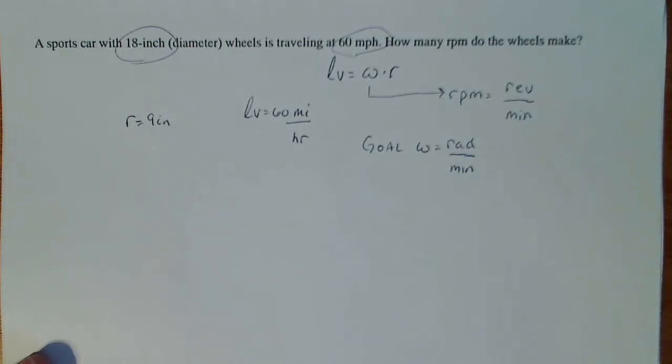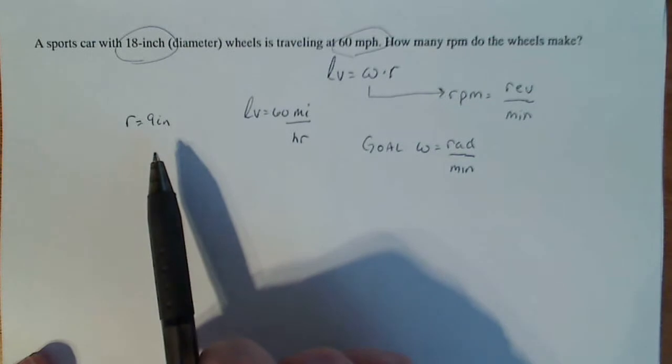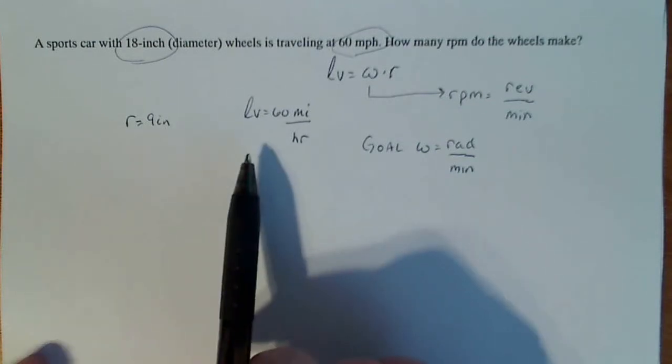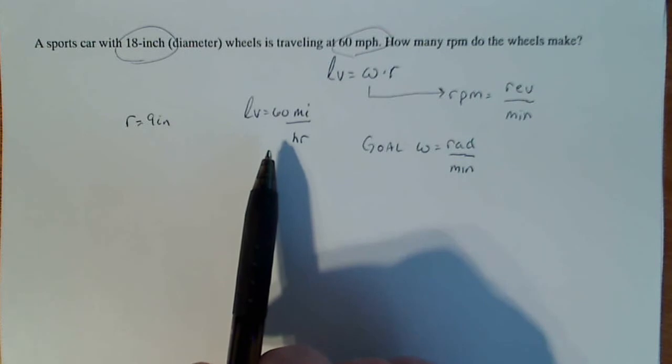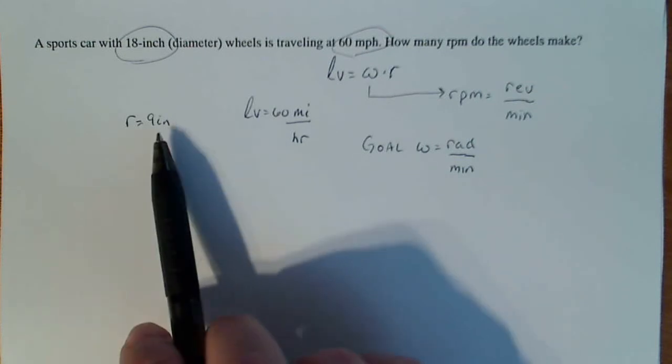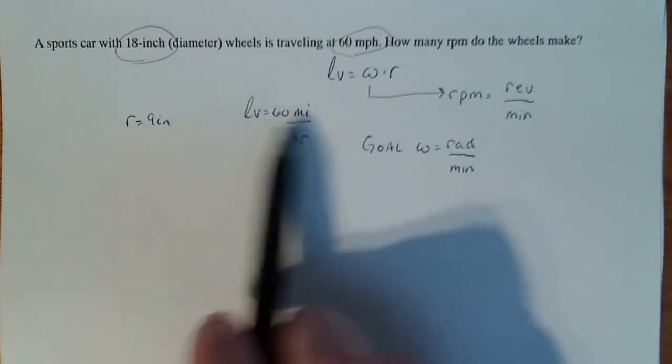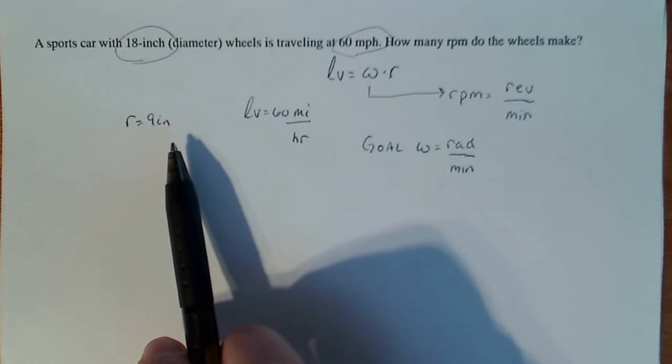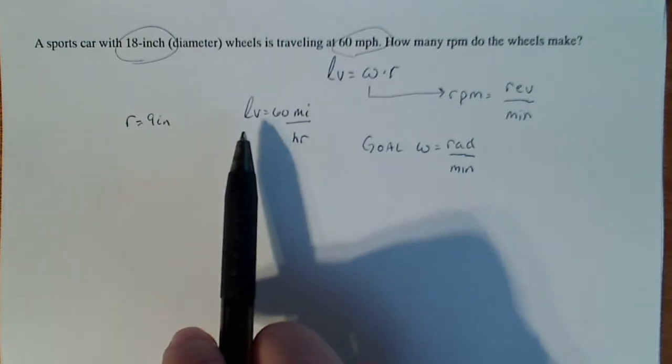So let's see, I know my radius is in terms of inches and my linear velocity is in terms of miles per hour. So we got miles and inches here that don't compare. So we have to convert one to inches or one to miles, whichever one we work.